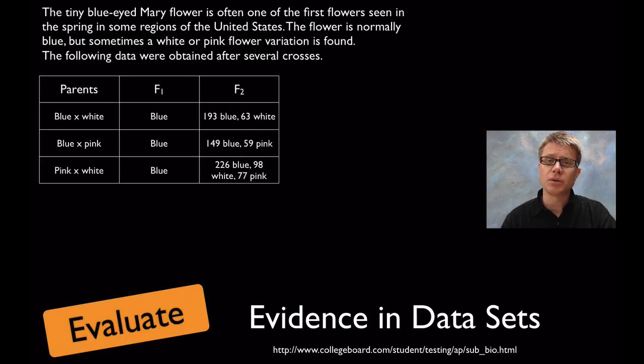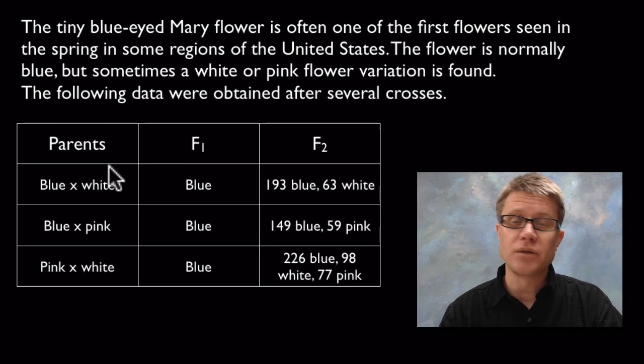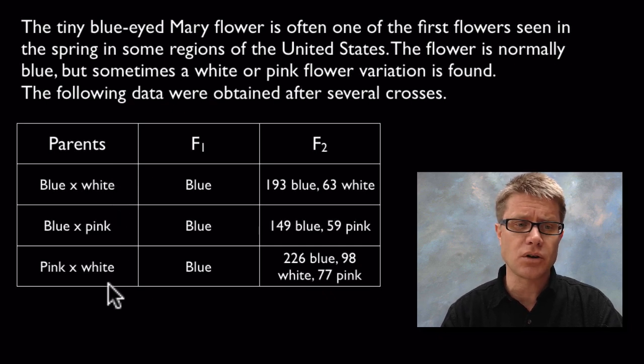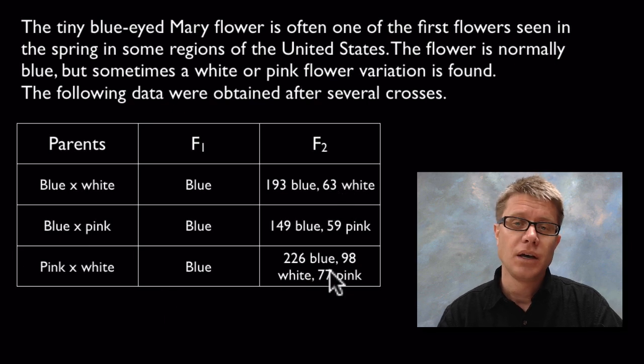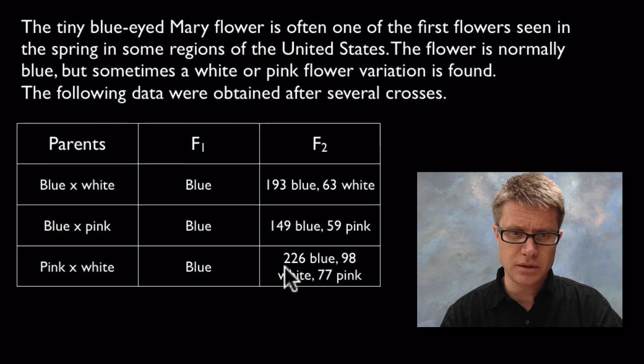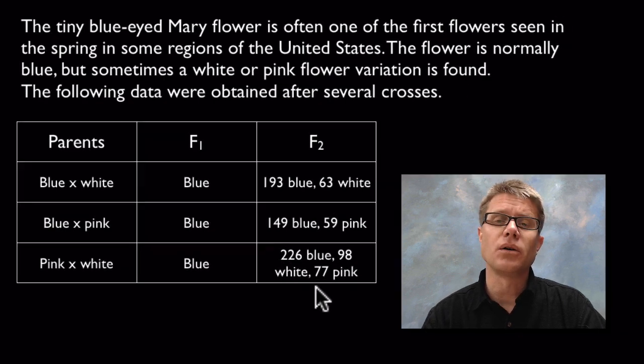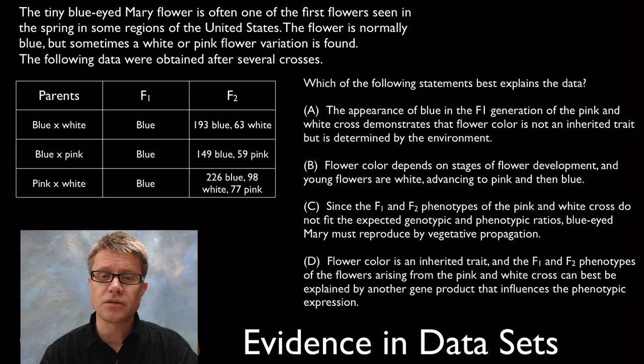Sometimes the data is just going to be in a multiple choice question. Right here we've got a genetics question where we have these tiny blue-eyed Mary flowers. We've got blue, but sometimes we'll have white and pink it says in the description. They're giving you the crosses, the P generations, the F1 and then the F2. As I look through this I see this looks like a 3 to 1, a 3 to 1, and this looks a little bit crazy down here. Almost like a 2 to 1 to 1. Which of the following accounts for that explanation? You may want to pause the video and take a stab at this question.